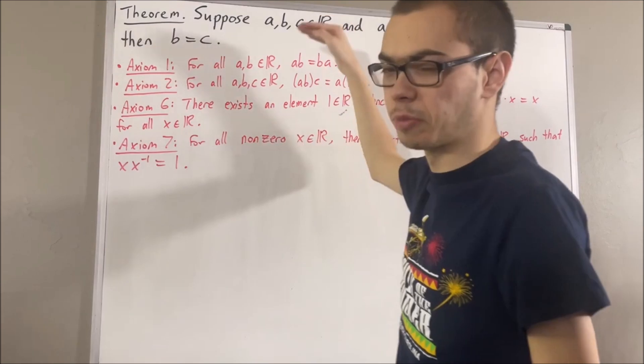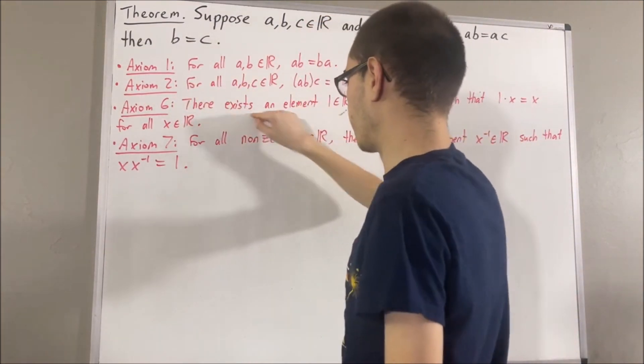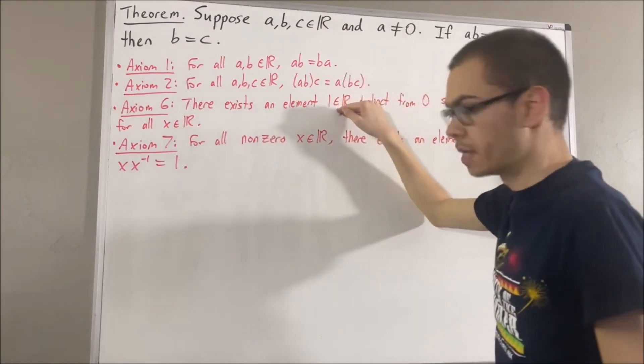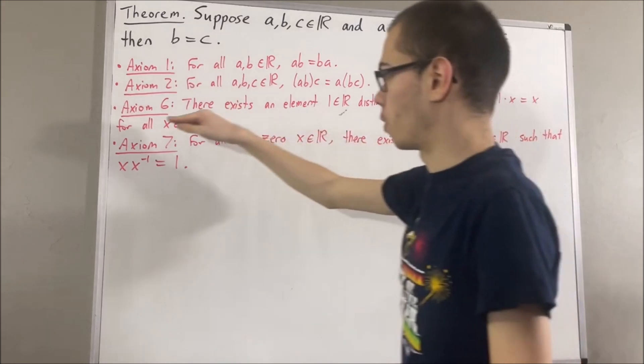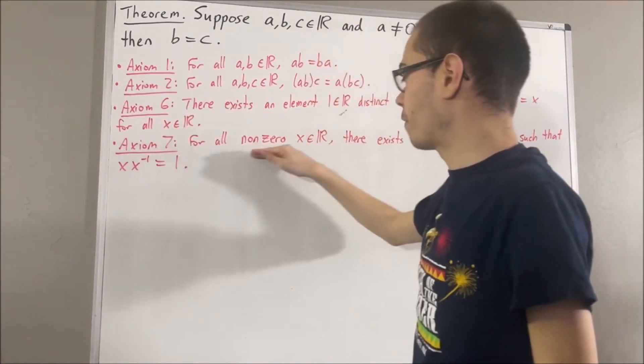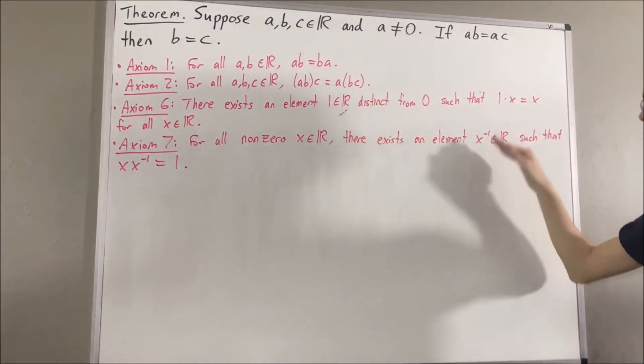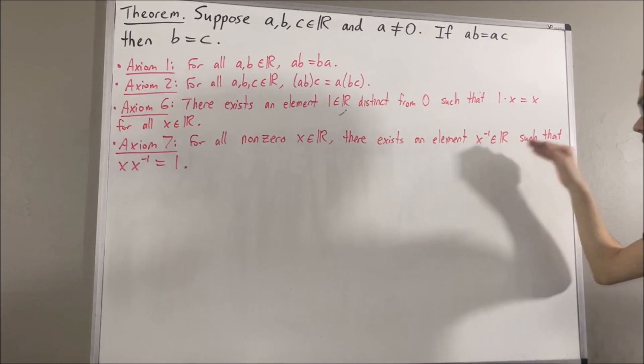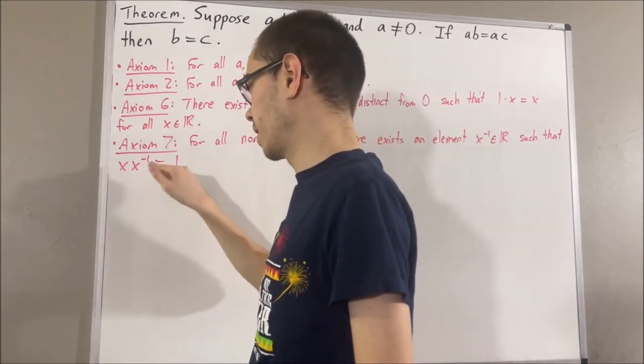Axioms 1 and 2 are just the commutative and associative laws. Axiom 6 tells us that there exists a real number 1 distinct from 0, such that 1 times x is equal to x for all real numbers x. And axiom 7 tells us, for every non-zero real number x, there exists a real number that we call the reciprocal of x, that satisfies the property that x times the reciprocal of x is equal to 1.